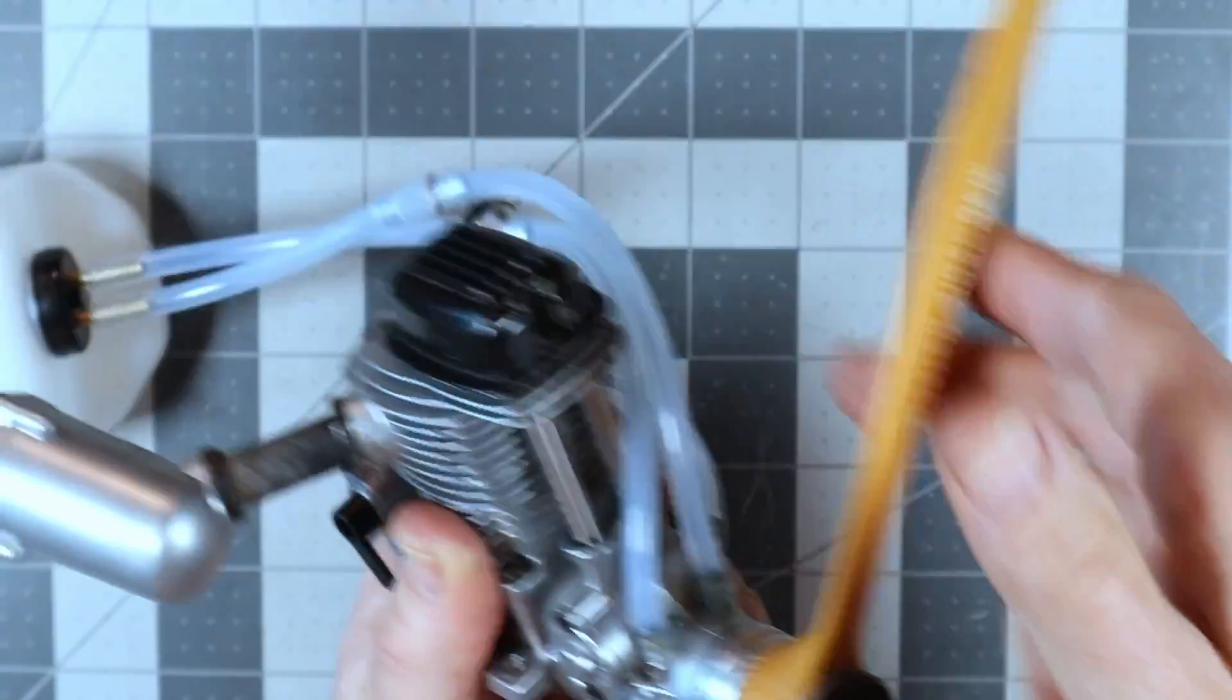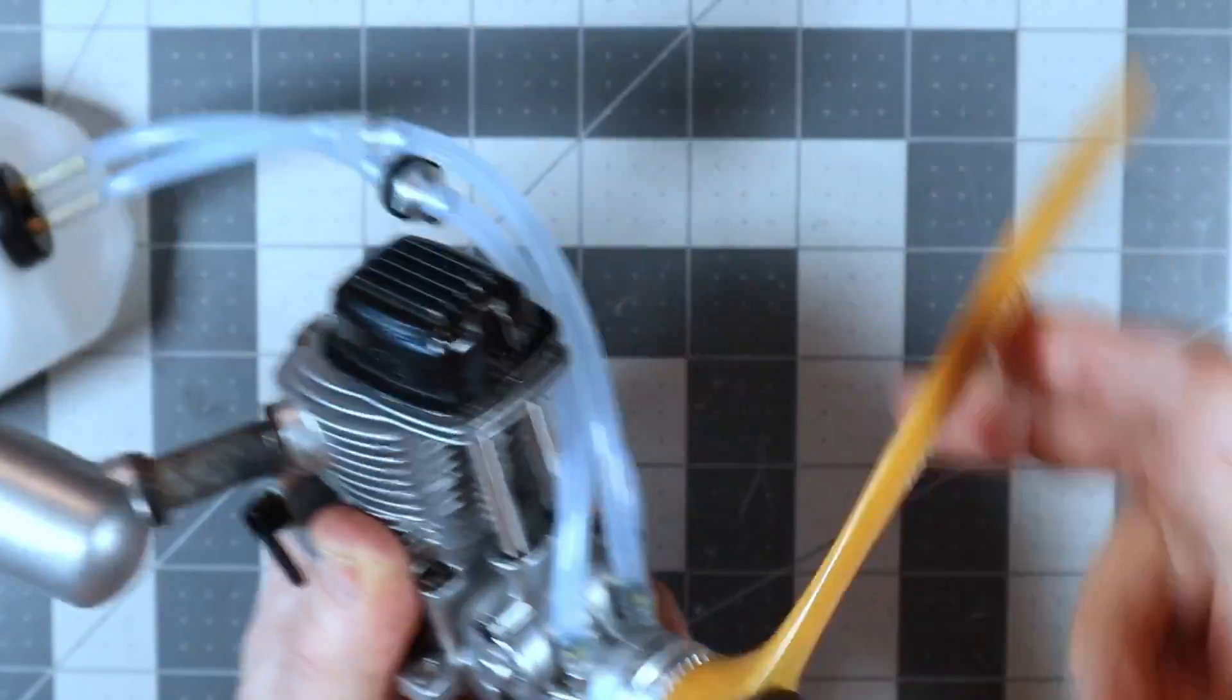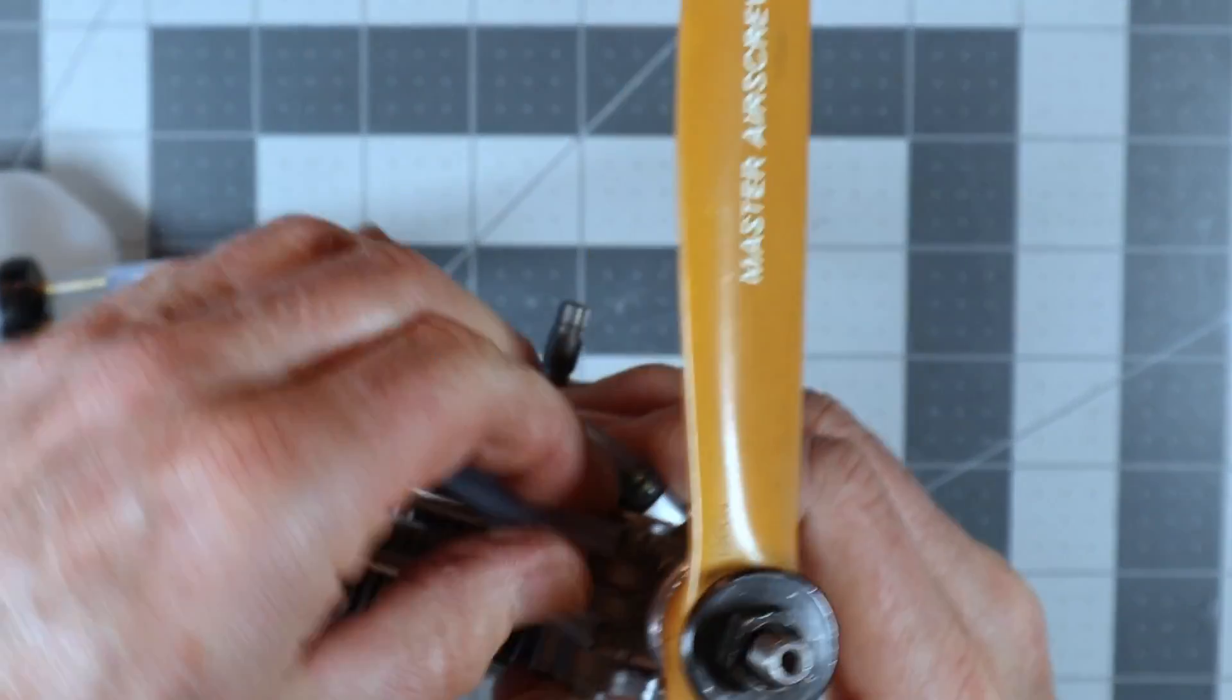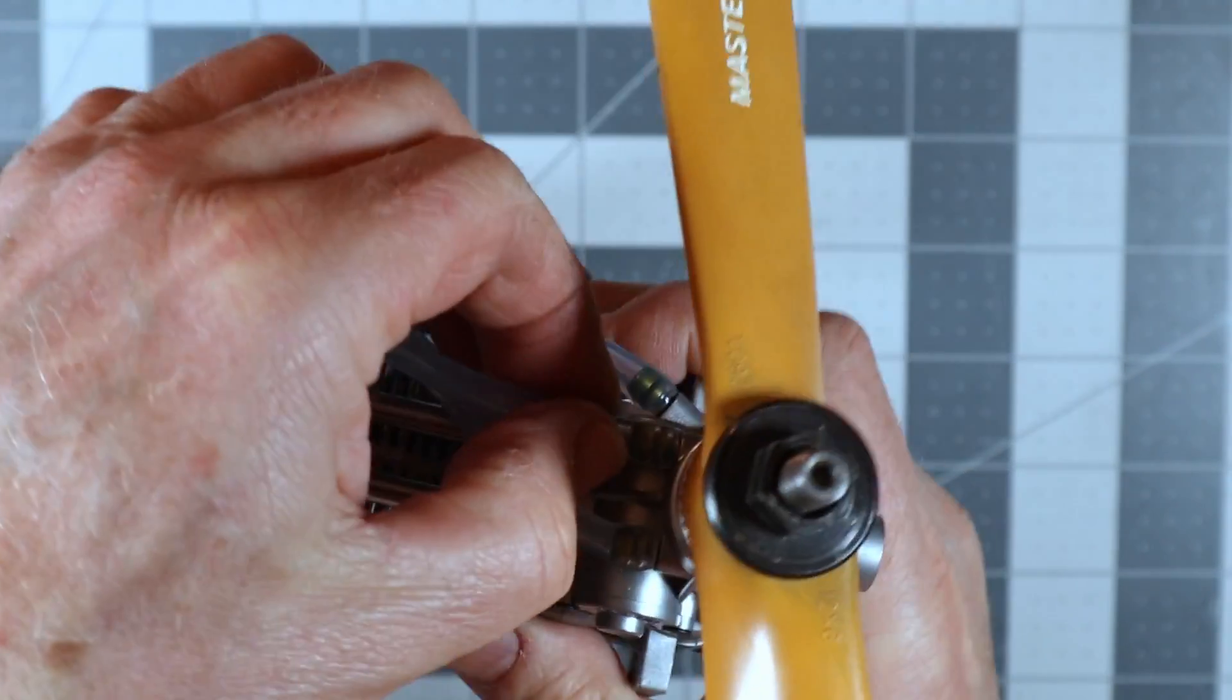But it's a 12-6. It's one of the recommended sizes of prop for this engine. Let's see if I can get that side.